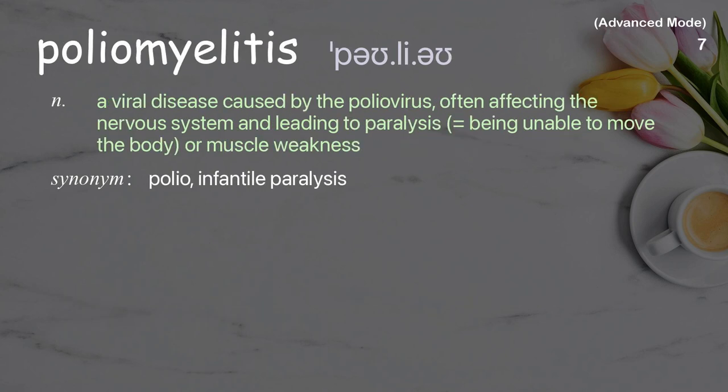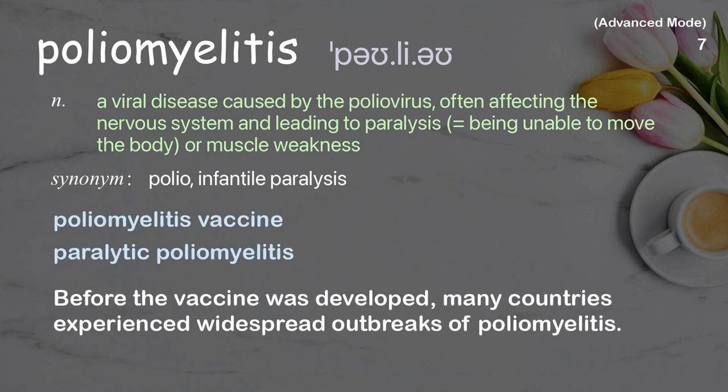Poliomyelitis: A viral disease caused by the polio virus, often affecting the nervous system and leading to paralysis — being unable to move the body — or muscle weakness. Examples: Poliomyelitis vaccine. Paralytic poliomyelitis. Before the vaccine was developed, many countries experienced widespread outbreaks of poliomyelitis.